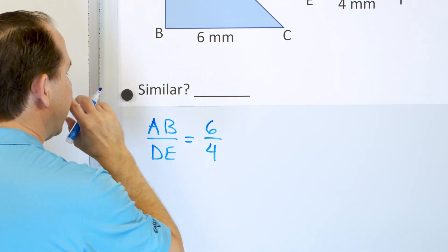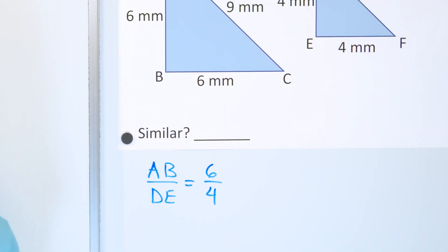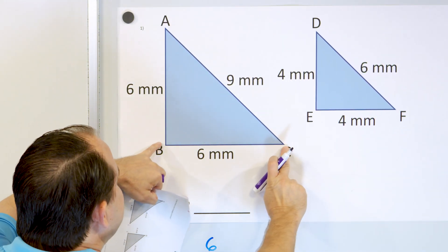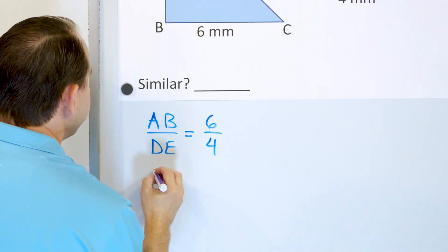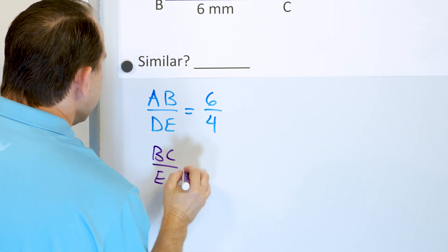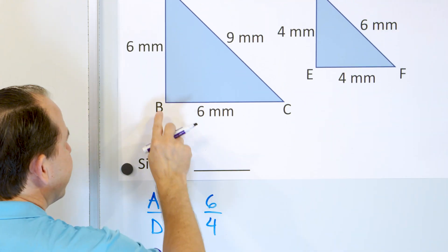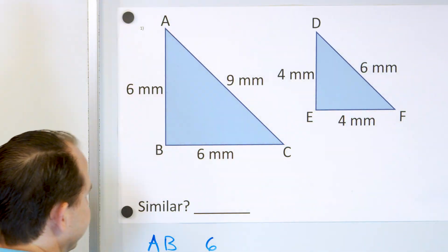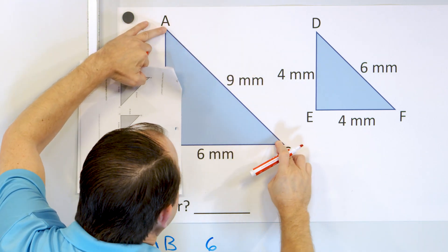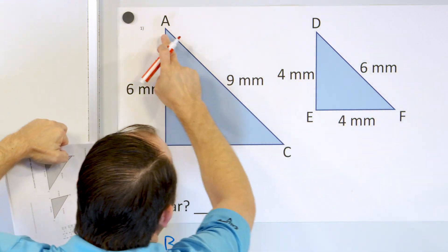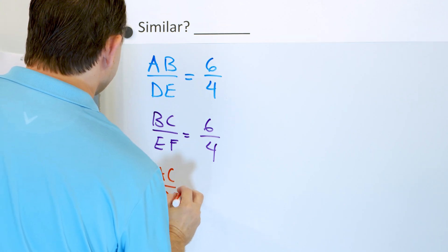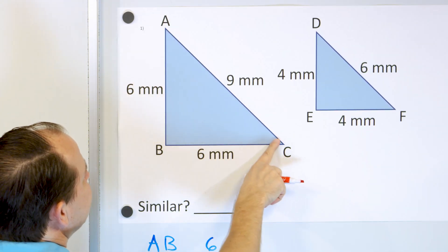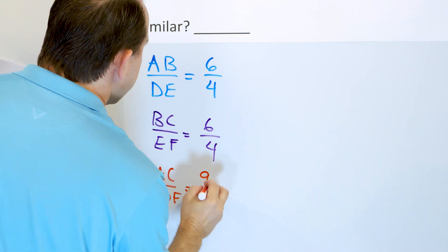Now let's look at side BC and compare it to EF. BC is 6 and EF is 4, so we get 6 over 4 again. Then for the last pair, we compare AC to DF. AC is 9 and DF is 6, giving us 9 over 6.